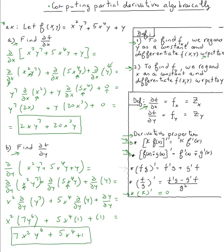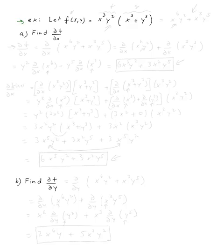We're done with Example 1. For Example 2, let f(x,y) = x³y²(x³ + y³). There's an easy way and a long way — we'll do both. The quicker way is to distribute first: x³ times x³ gives x⁶y², and y² times y³ gives x³y⁵. So we take the partial derivative of x⁶y² + x³y⁵.